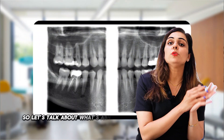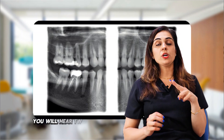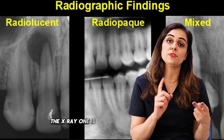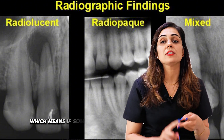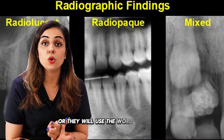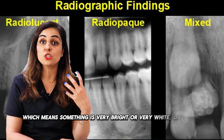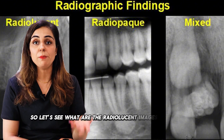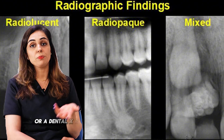Let's talk about what's abnormal or unhealthy in a dental x-ray. You will hear two words from your dentist very often when they explain the x-ray: one is radiolucent, which means something is extremely dark like a shadow; and the other is radio-opaque, which means something is very bright or very white and shiny. Let's see what the radiolucent images on a dental radiograph look like.